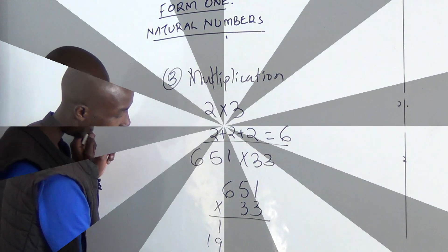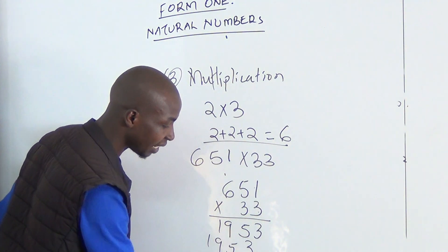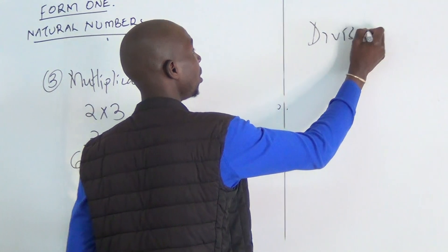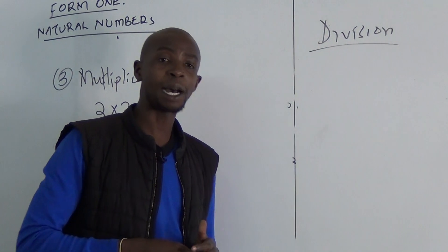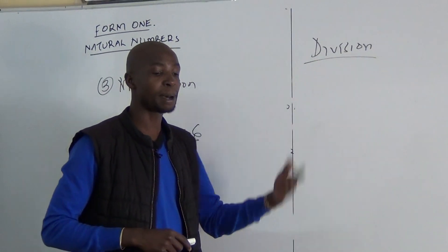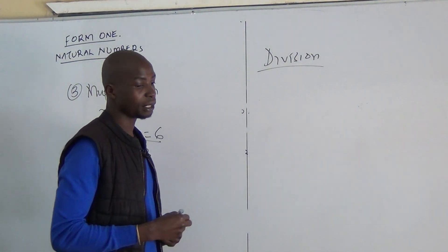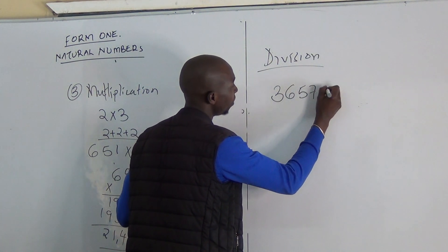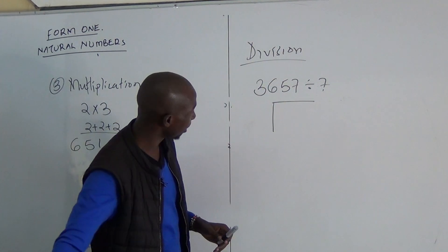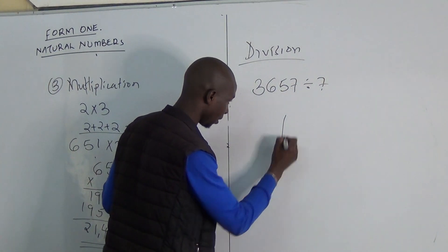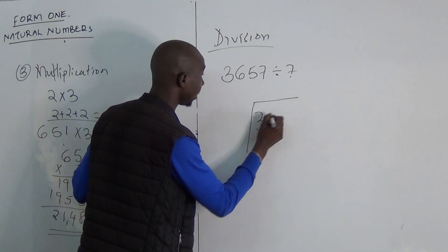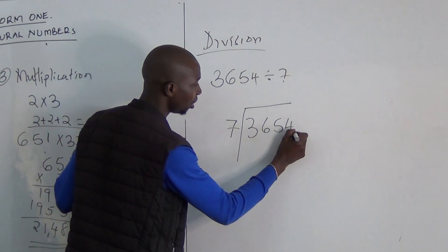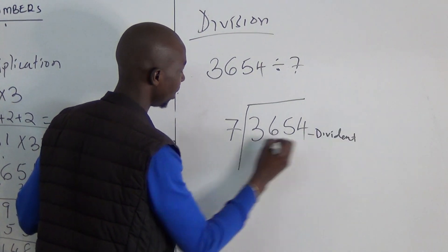Now let us come to division. Division is the opposite of multiplication. If a number has been divided by the other one, it means it has been subtracted that number of times. So for example I have to divide 3654 by 7. So have your sign very well like this one. Put this number in, 3654 divided by 7. This is called dividend and this is called divisor.